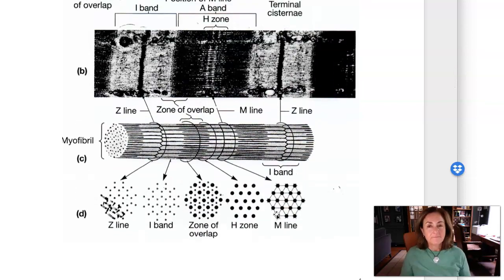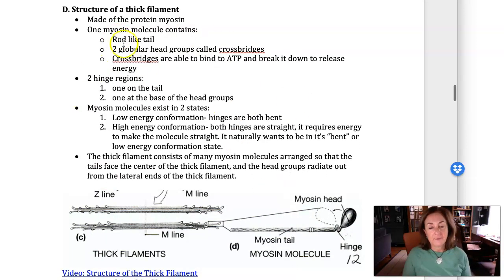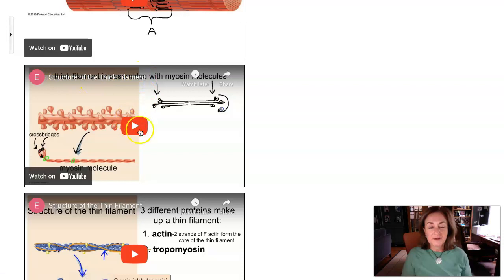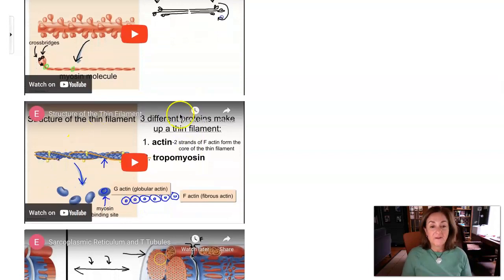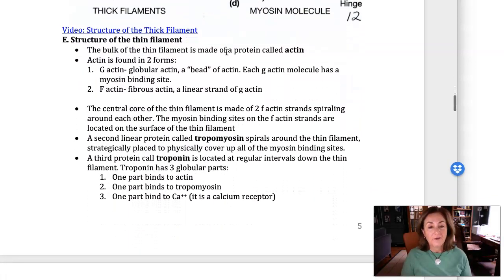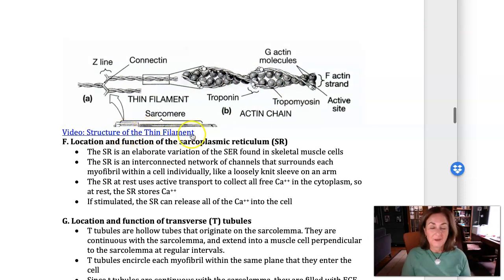Once you're comfortable with the structure of a myofibril, we move on to what the thick filament and thin filament are. The thick filament is made out of a protein called myosin. I go over the structure of a myosin molecule and how those myosin molecules are put together to form a thick filament. I do the same thing with the thin filament — talking about the components that make up a thin filament and how those components are woven together. Please look at those videos for those discussions.